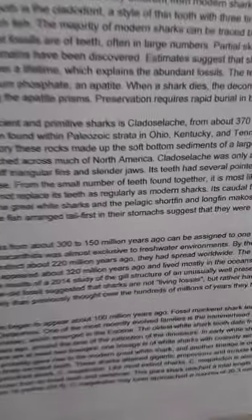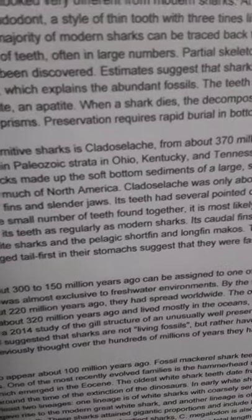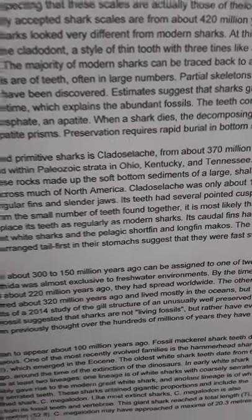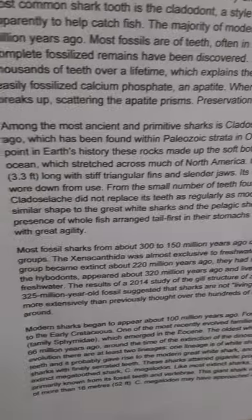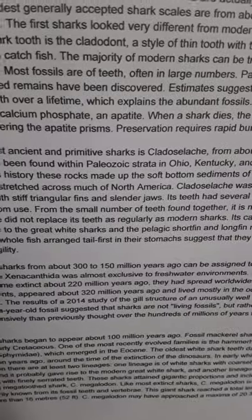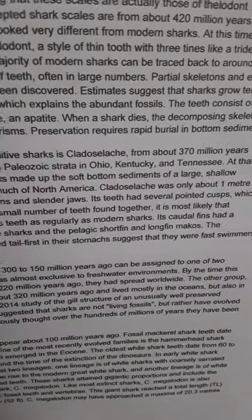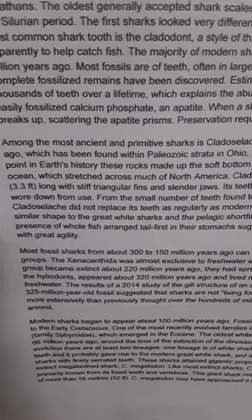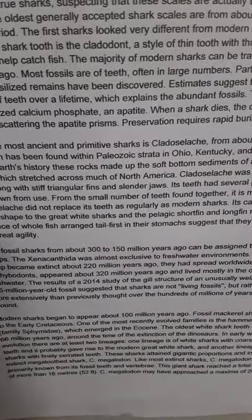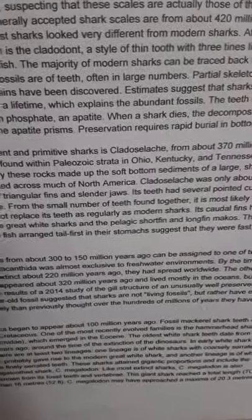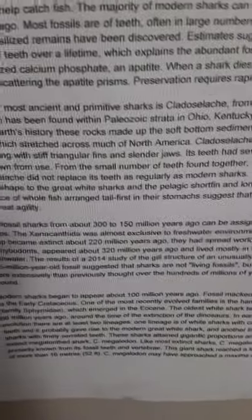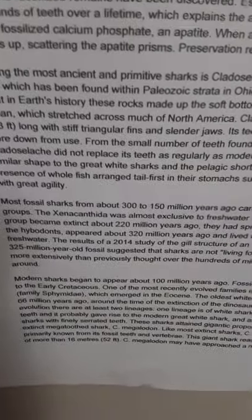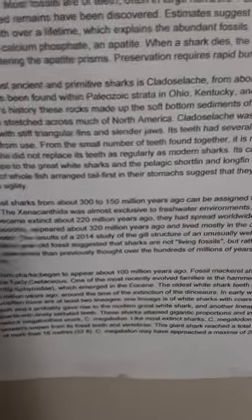Among the most ancient and primitive sharks is Cladoselache, from about 370 million years ago. Cladoselache has been found within the Paleozoic strata in Ohio, Kentucky, and Tennessee. At that point in Earth's history, these rocks made up the soft bottom sediments of a large, shallow ocean which stretched across much of North America.